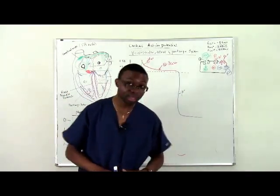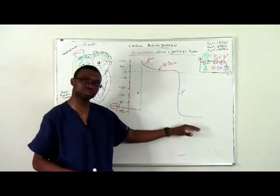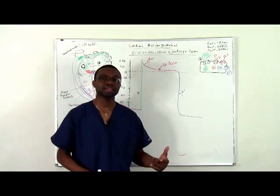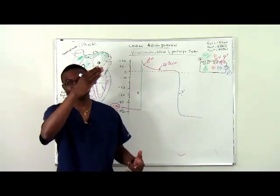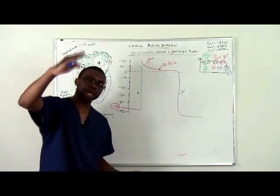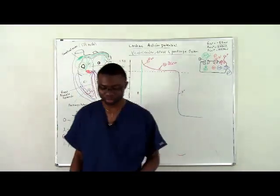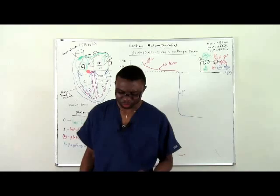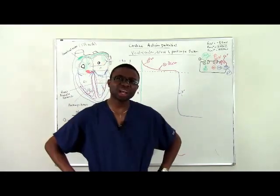We reach potassium equilibrium potential, and then the cell depolarizes again, goes through initial repolarization, plateaus out, and then repolarizes. You probably wonder why we have to go through all this trouble just to talk about the action potential inside the ventricular system.